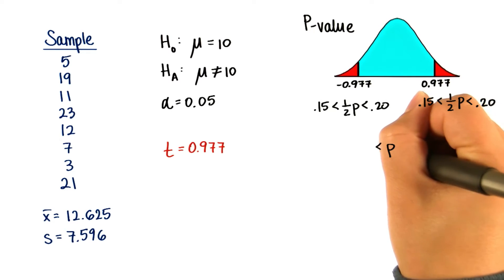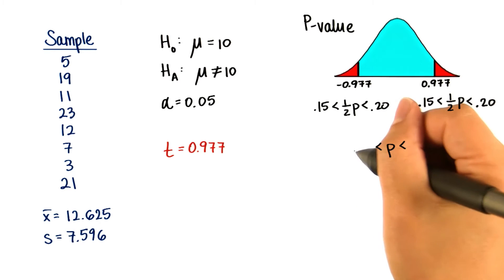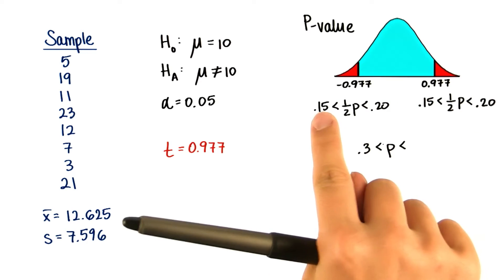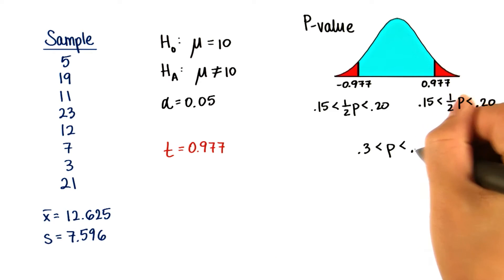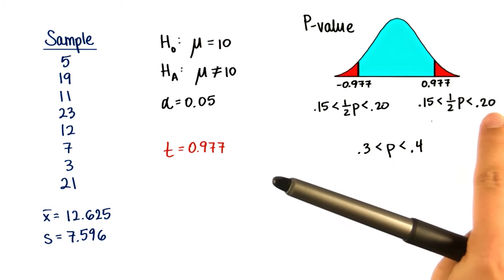Which means that our total p-value would be between 0.3, which is 0.15 plus 0.15, and 0.4, which is 0.2 plus 0.2.